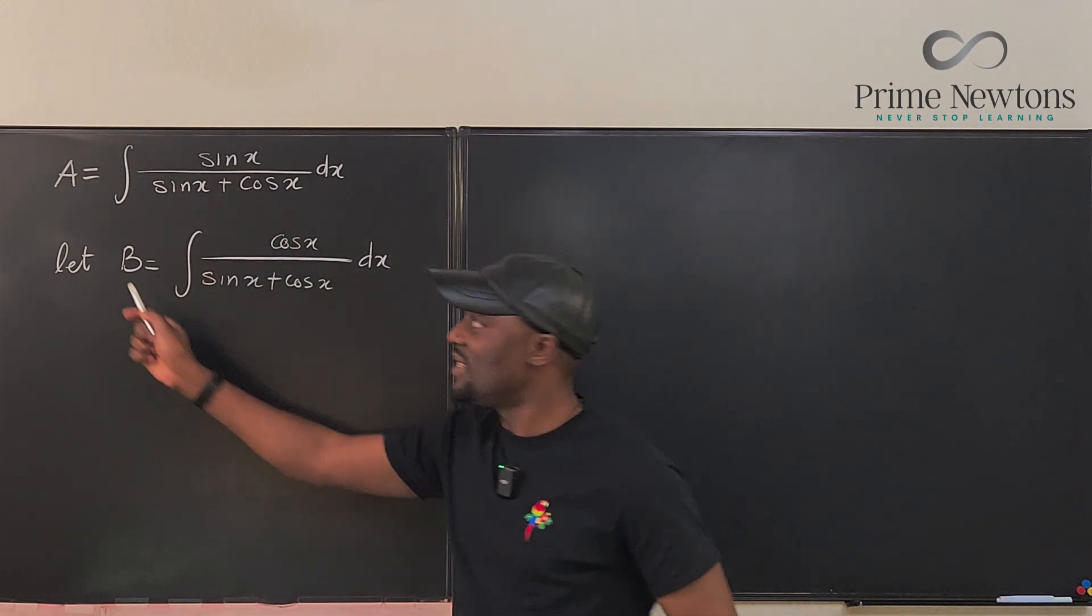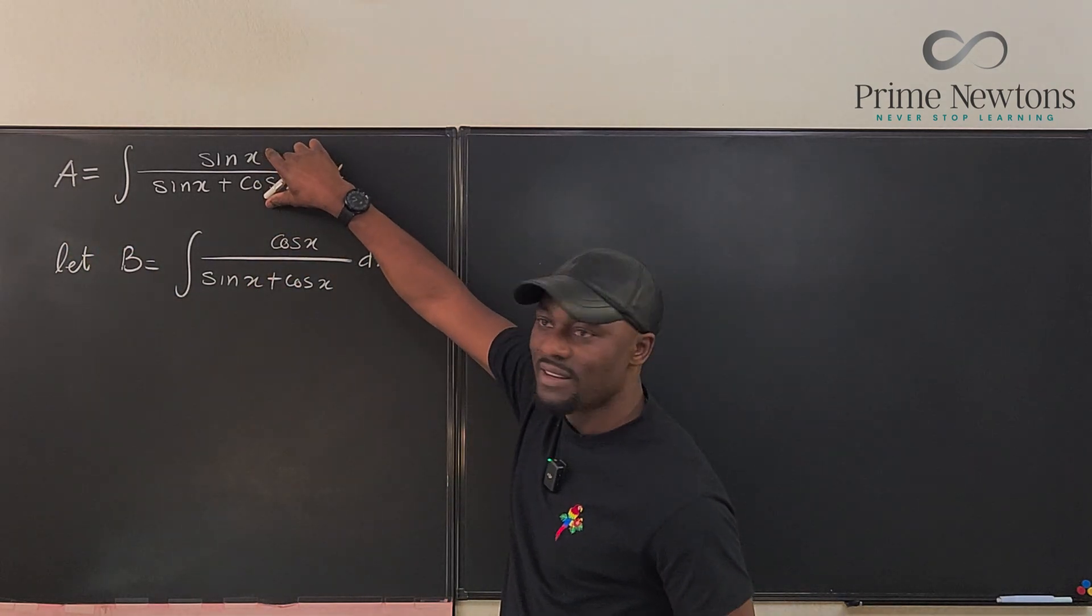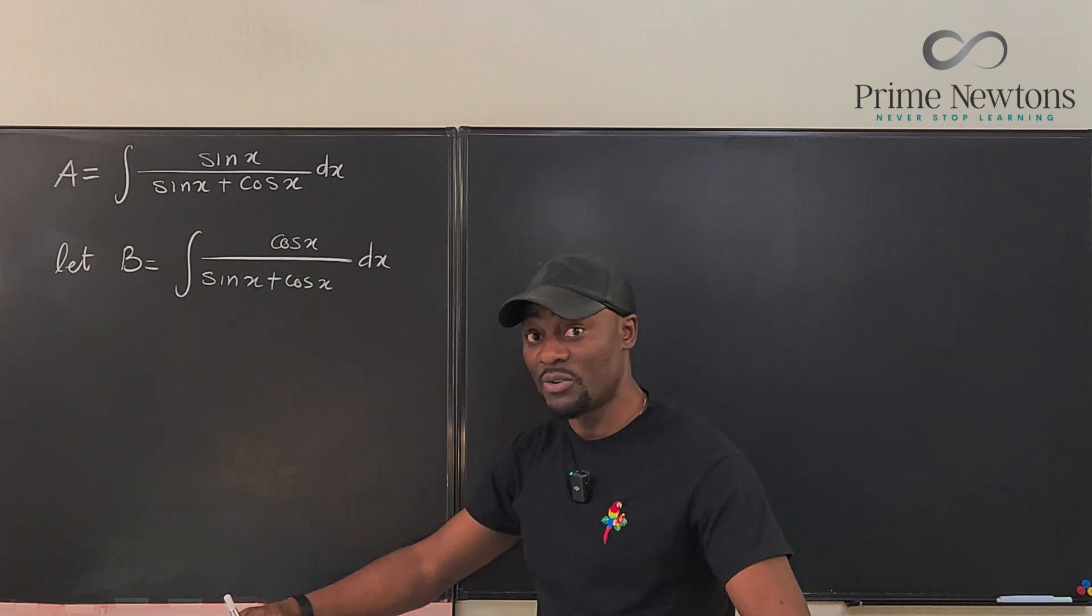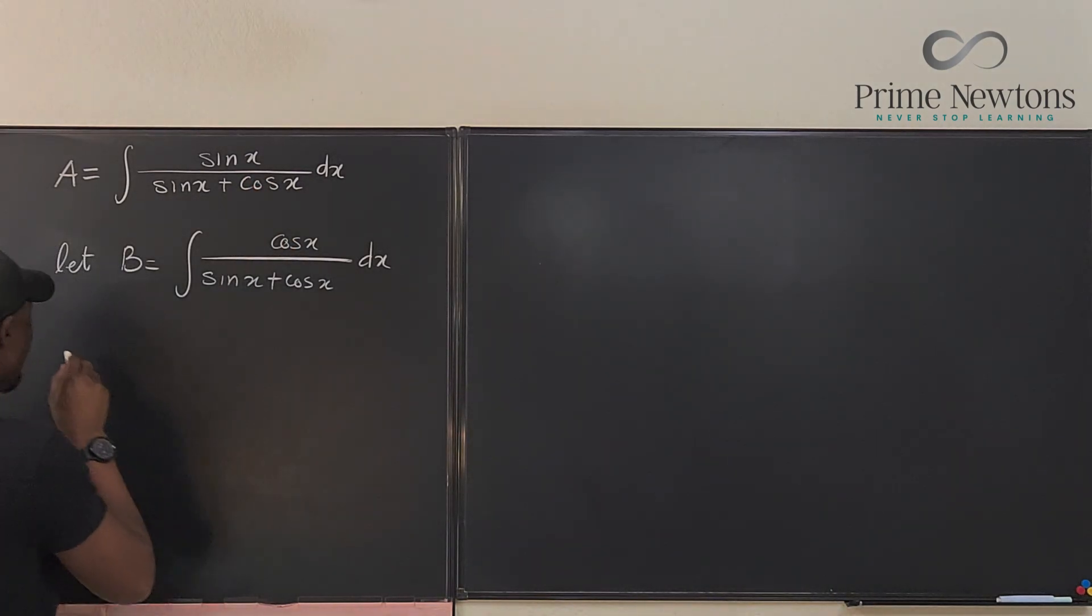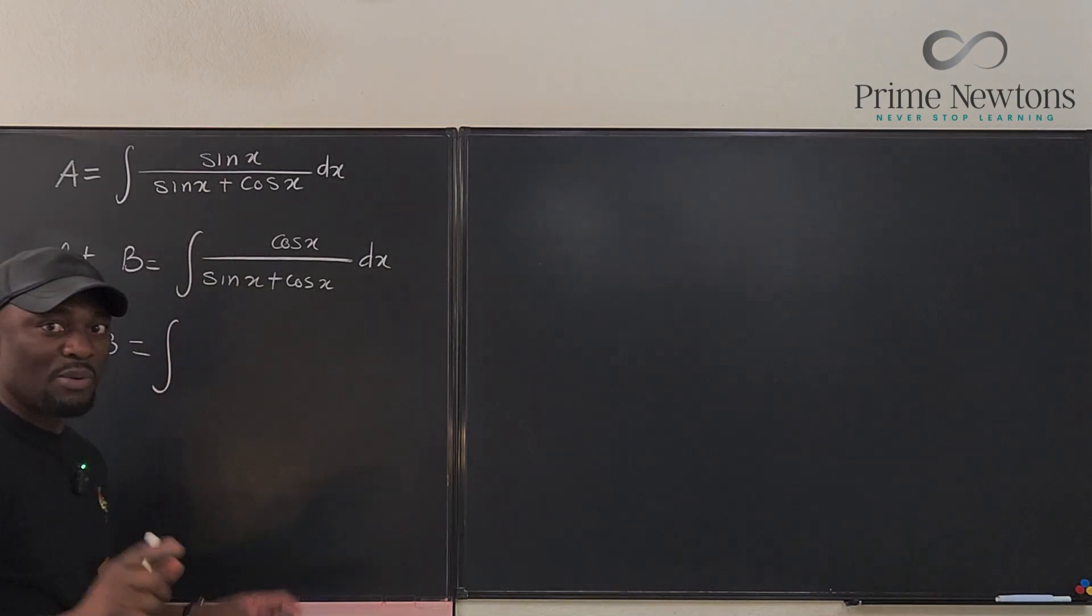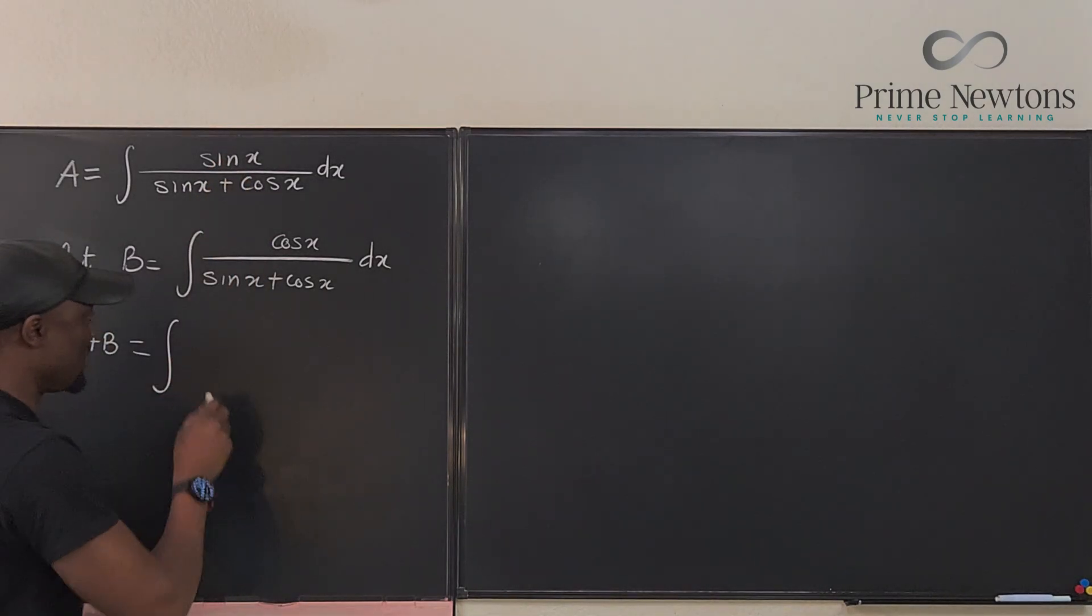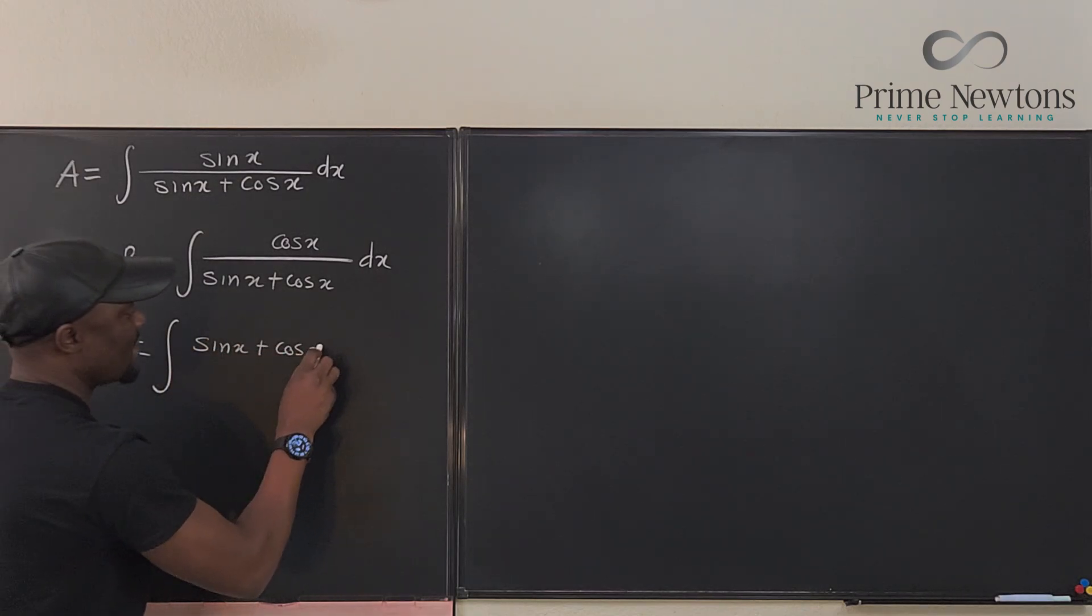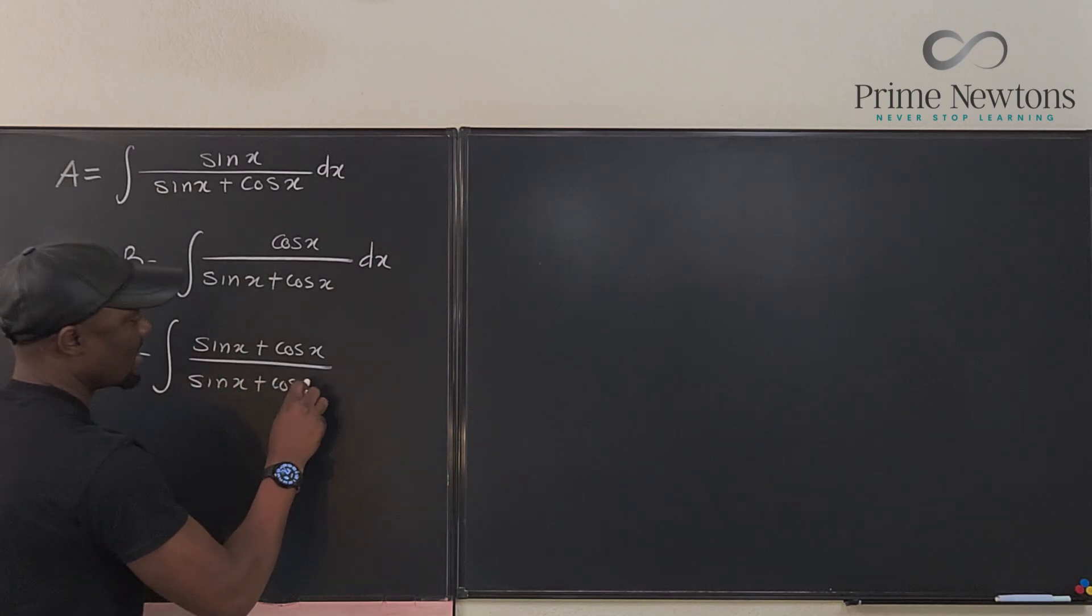If I decide to add these two integrals A plus B, I'll be adding the integrands. So A plus B is going to be the integral of the sum of these two. But notice that they have the same denominator, so you just need to add the numerators which is going to be sin(x) plus cos(x) over sin(x) plus cos(x) dx.